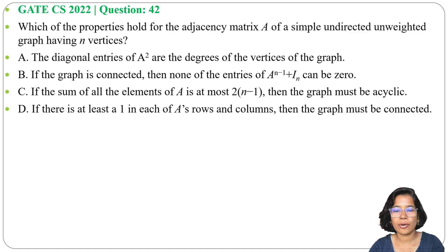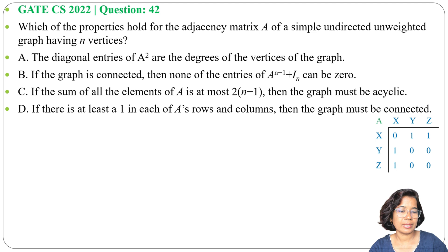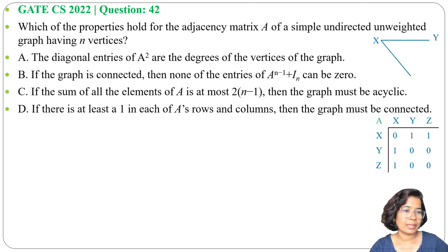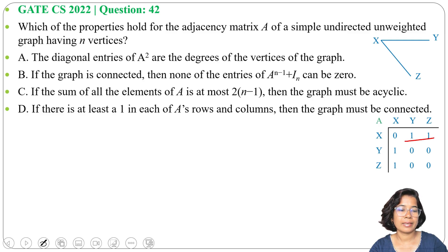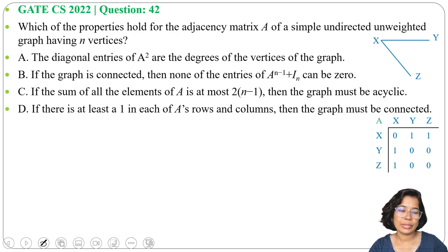Option A: The diagonal entries of A² are the degrees of the vertices of the graph. Let me take an adjacency matrix. This is the adjacency matrix and its graph. There are three vertices x, y, z. x is connected with y and z; y and z are connected with x.